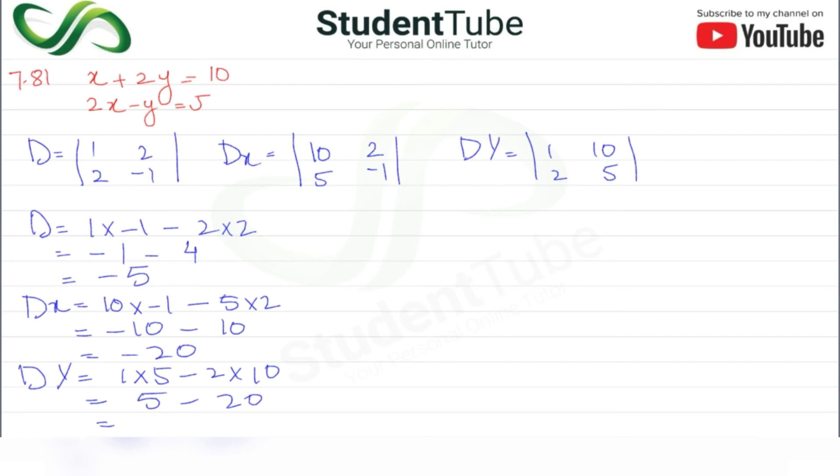For the value of x, we use Dx upon D, and for y, Dy upon D. So x equals Dx which is minus 20, D is minus 5. Minus minus cancels, 5 fours are 20, answer is 4. y equals Dy which is minus 15, D is minus 5. Minus minus cancels, 5 threes are 15, answer is 3. So (4, 3) is the answer.